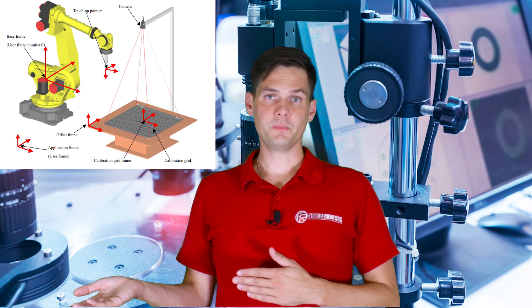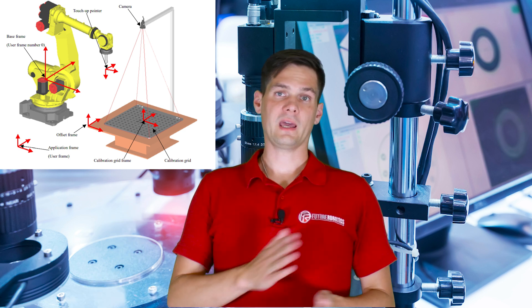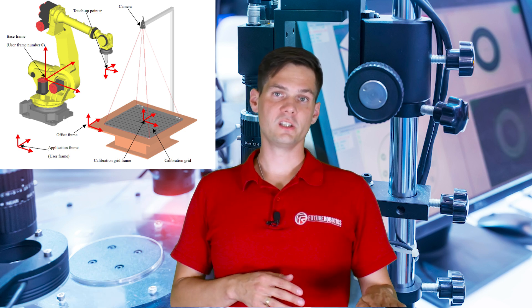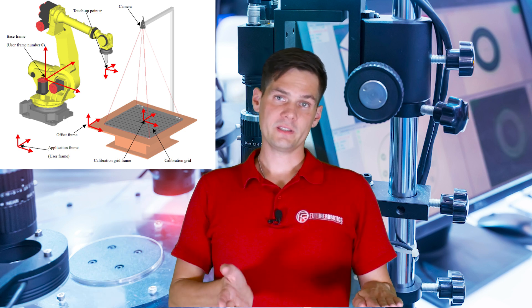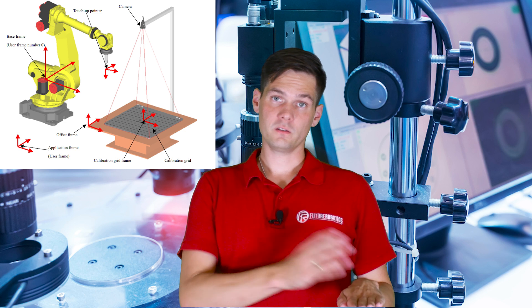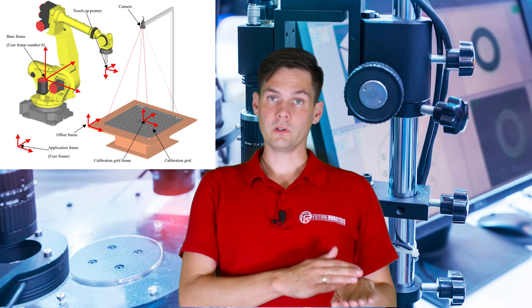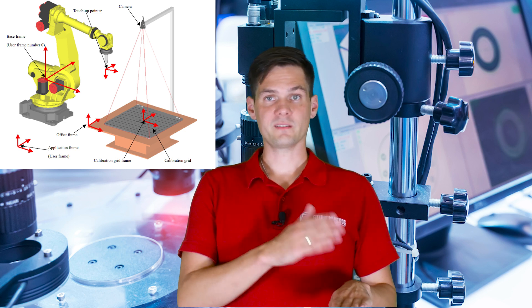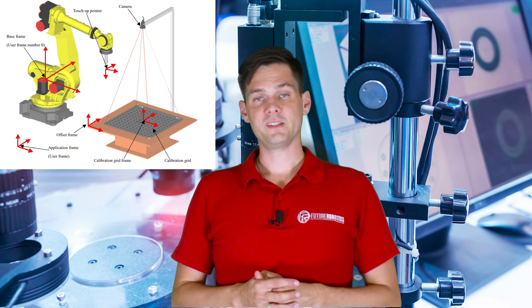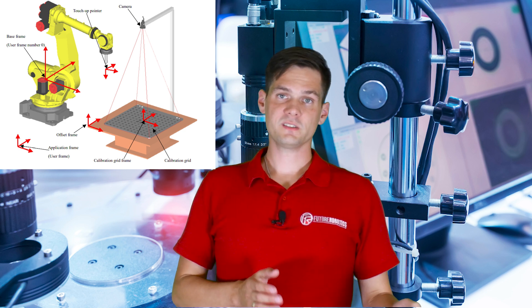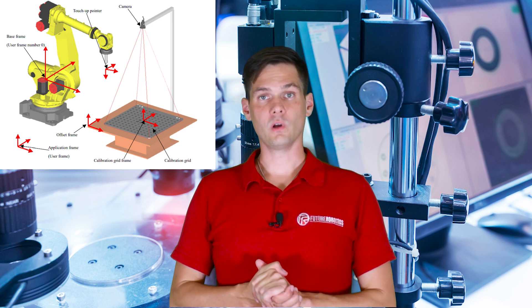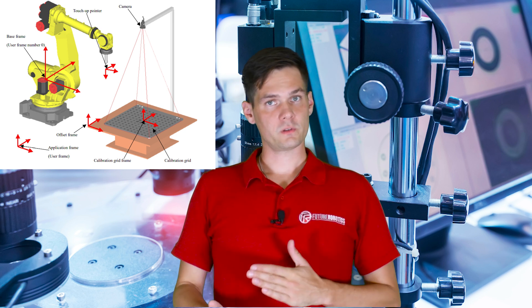To do this, you teach a TCP on the robot, and once you've taught the camera's x and y direction using the grid, you move the robot to align with the origin and x/y directions. This way both the robot and the camera know which direction we're talking about. And that was the first most common mistake I've seen.